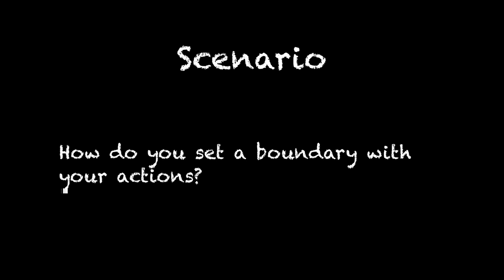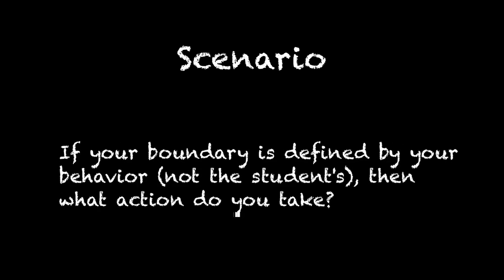Another question: is your boundary defined by your behavior and not the student's? When you're thinking about what action to take, you've got to be thinking about what administration wants you to do, what the school-wide policies on uniform violations are — does the child go to the principal, head home, is the parent called? What happens when the boundary is violated? That way, as the teacher, you know what action to take, it's in line with all other teachers, and everybody's on the same page.